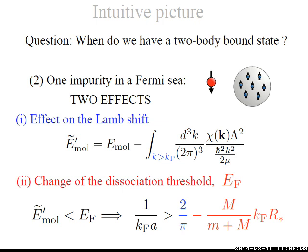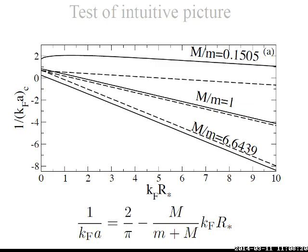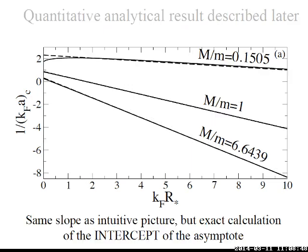Comparing this simple reasoning to numerical results, the dashed lines from this equation start at 2 over pi but the slope is quite well captured. To get a better result, one needs a more careful calculation. We introduce a non-trivial weakly interacting limit: first the standard limit where a tends to 0-minus with R star fixed, in which the 1/a term dominates and we lose information about the narrowness. Instead, we take the limit where a tends to 0-minus and 1/a is comparable to R star — so R star tends to infinity — keeping their product constant.